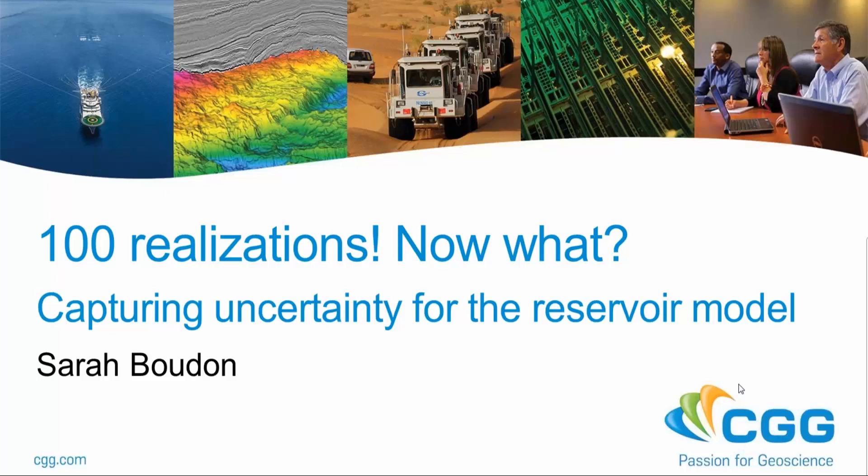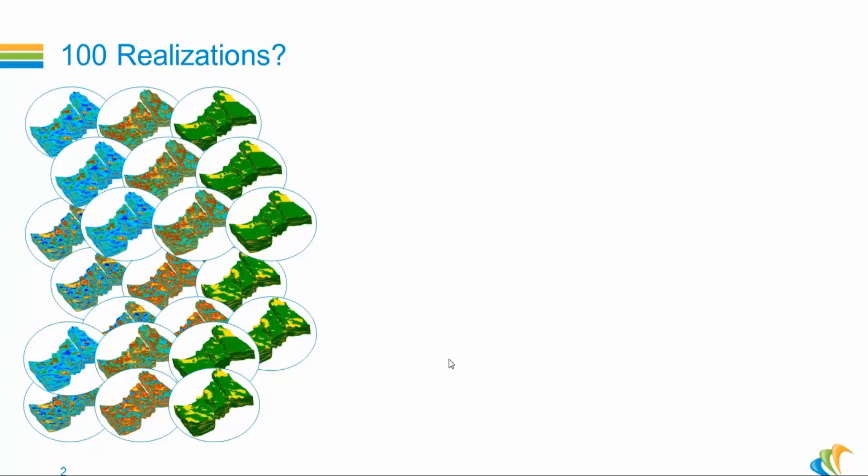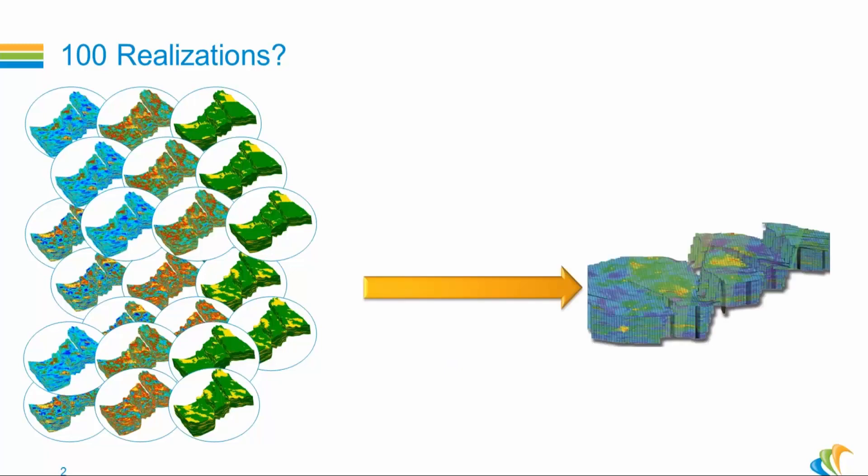Uncertainty is the key word here. We all know there is always uncertainty in any reservoir characterization product because we'll never know everything about the subsurface. We also know that a way to capture this uncertainty is to generate multiple models of the reservoir. So you are after an ideal reservoir model which is the repository for all the information you have about the reservoir.